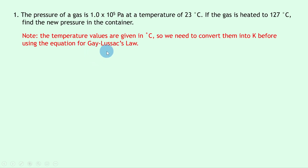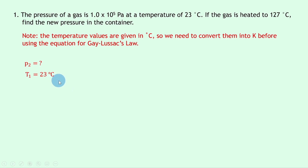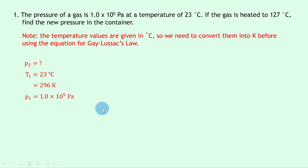Remember, that's because the equation for Gay-Lussac's law only holds when we use temperature in Kelvin rather than degrees Celsius. So writing down what we know from the question, we're trying to find P2, the final pressure. We know the initial temperature T1 is 23 degrees Celsius, which we need to convert into Kelvin — so we do 23 plus 273, which gives us 296 Kelvin. The initial pressure P1 is 1.0 times 10 to the 5 pascals, also known as atmospheric pressure. And the final temperature T2 is 127 degrees Celsius, which again we convert into Kelvin by adding 273, giving us 400 Kelvin.